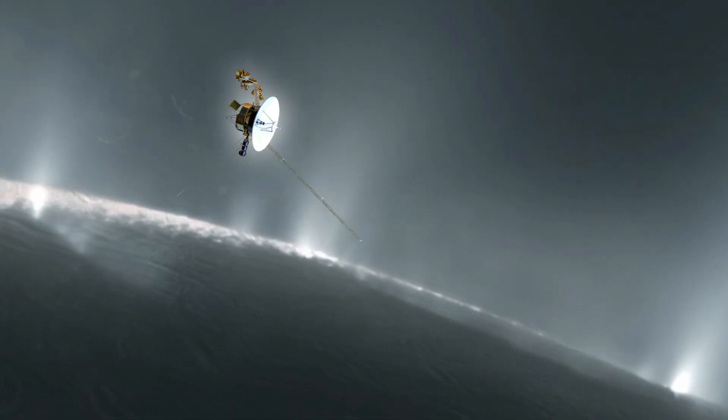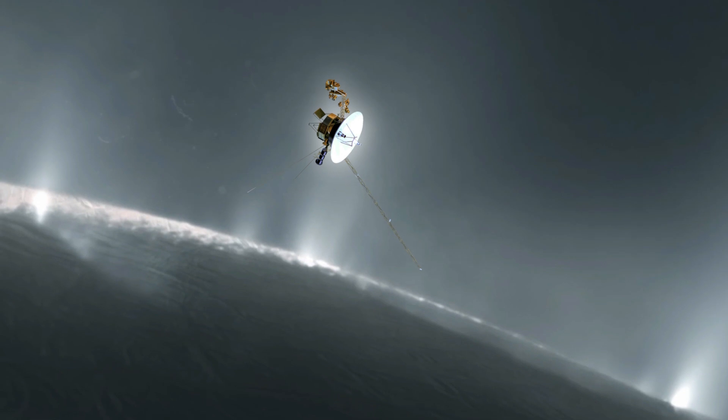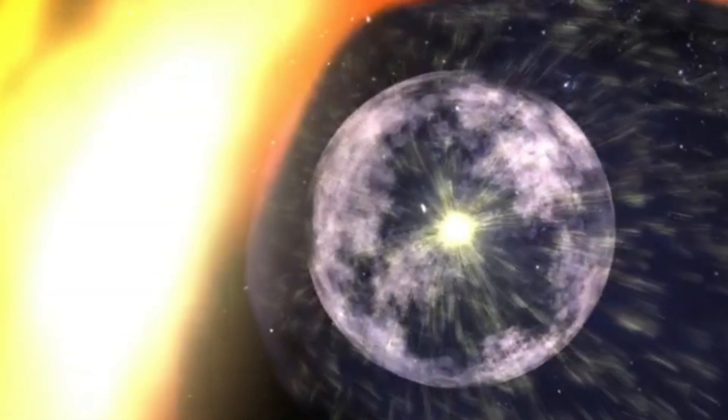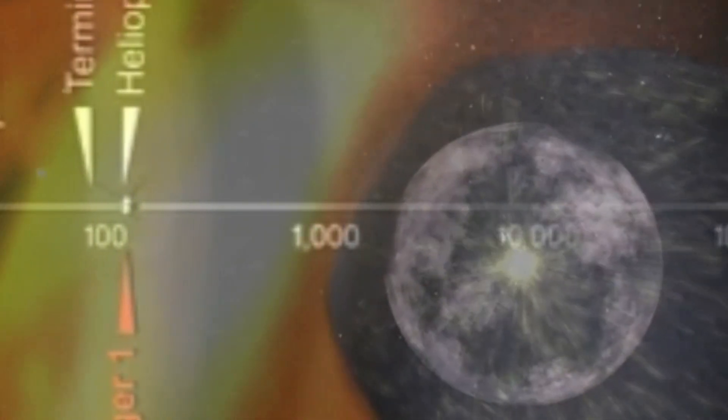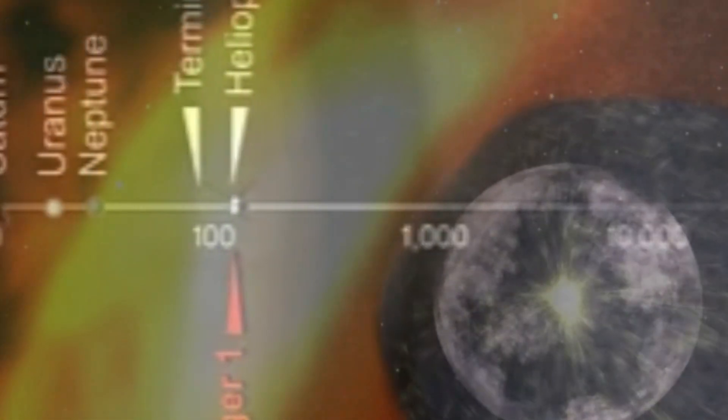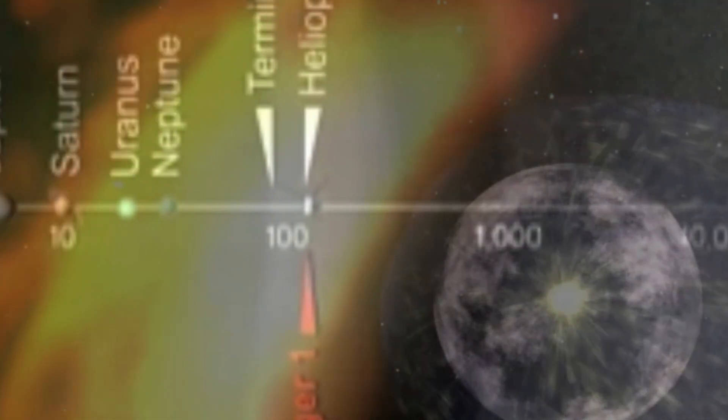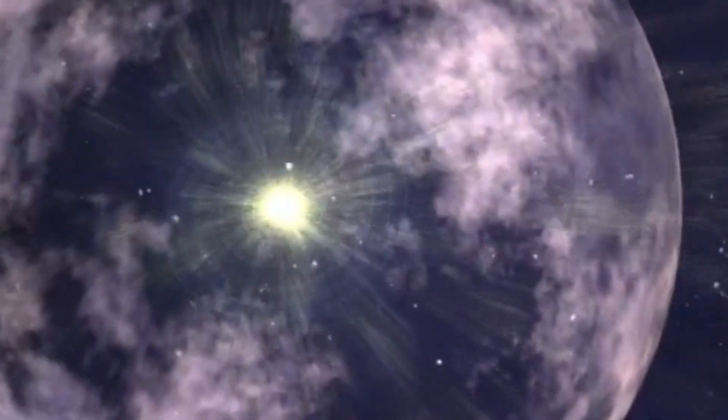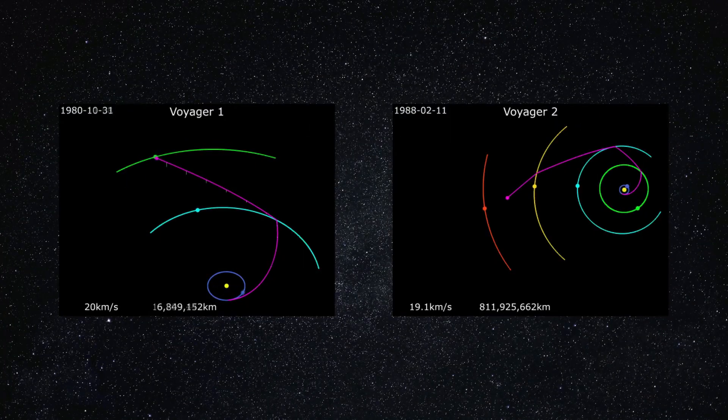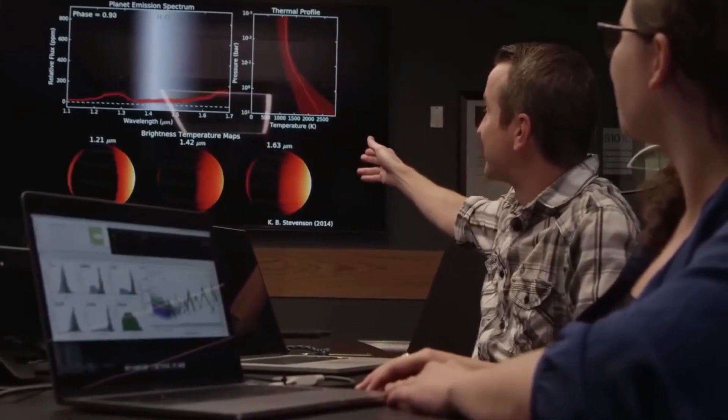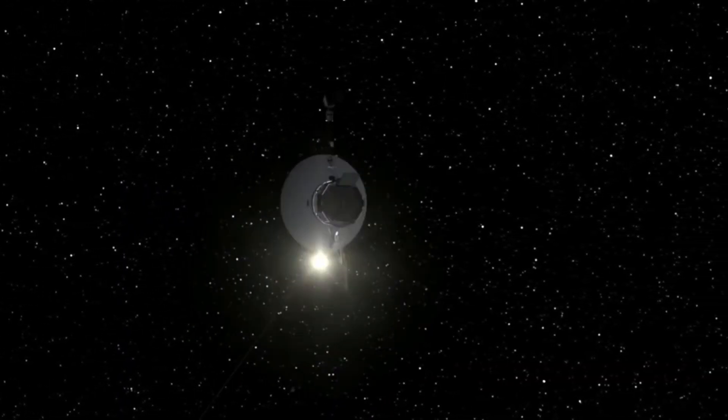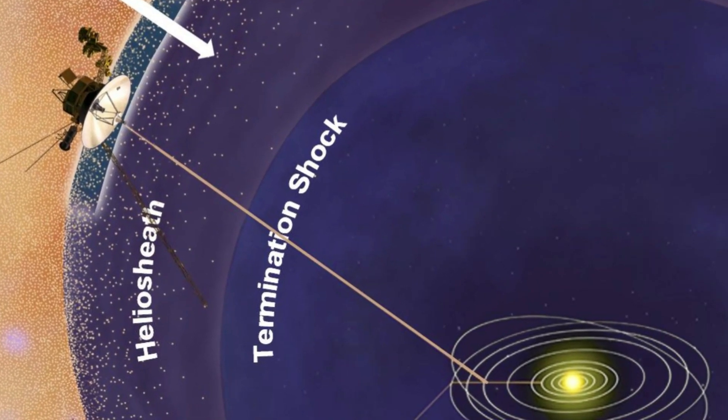And then there's more. Voyager is also helping us understand cosmic rays, those mysterious high-energy particles from across the universe. Inside the heliosphere, we're shielded by the solar wind. But outside, Voyager is exposed. And when it crossed the heliopause, the spike in cosmic rays confirmed just how much protection our sun offers. We live in a bubble, a sanctuary in a galaxy of radiation. That's the quiet truth Voyager reveals. We sent it to study others, to reach the stars. But in doing so, it showed us more about ourselves, about our sun, our boundaries, our home.